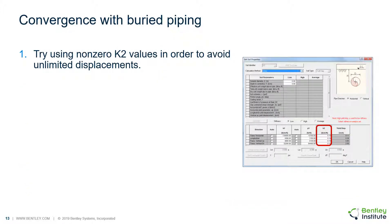Buried piping systems have their own tricks to assist with convergence. The first trick is to try using non-zero K2 values in order to avoid unlimited displacements.